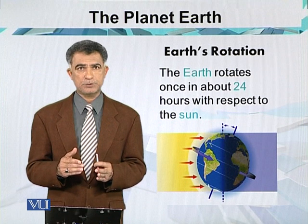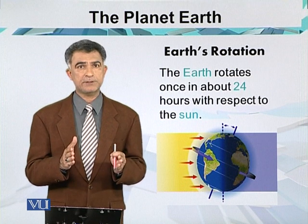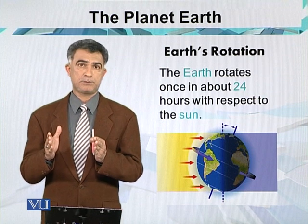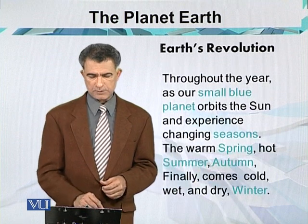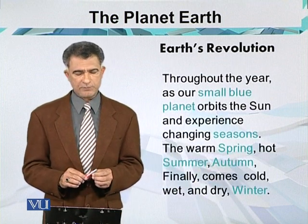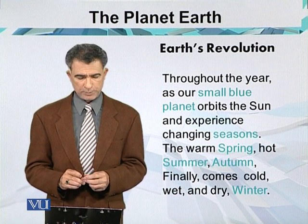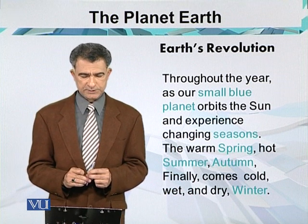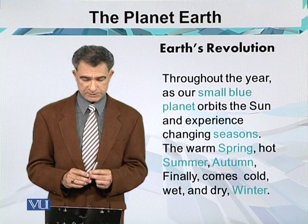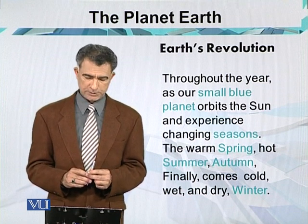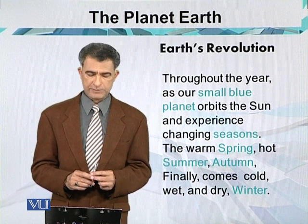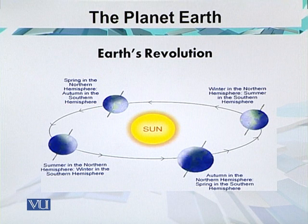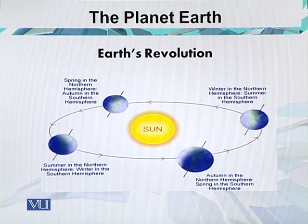Half of the portion will be bright and half is under darkness. Through the year, as our small blue planet orbits the Sun, it experiences changing seasons: the warm spring, the hot summer, the autumn, and finally the cold, wet, and dry winter. The Earth revolves around the Sun in approximately one year, or 365.25 days.